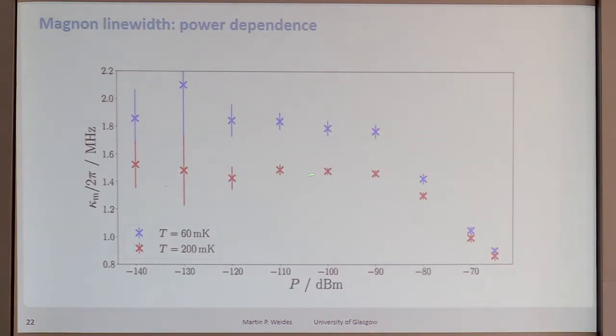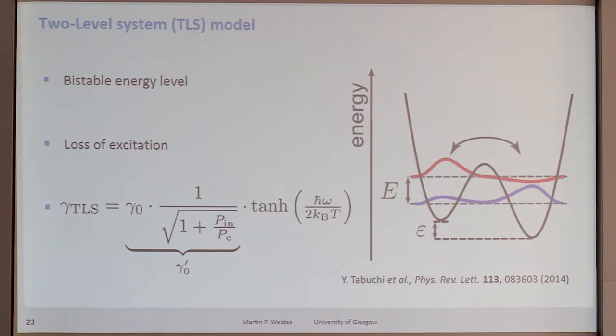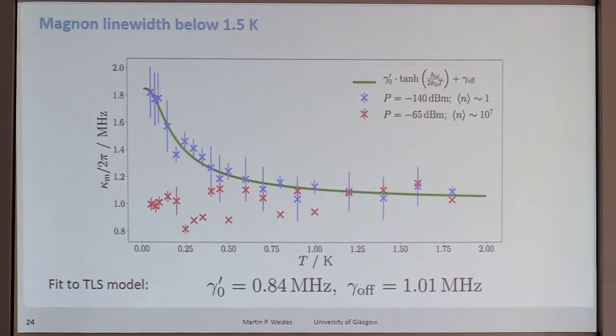This dependency, the power dependency and the temperature dependency can be explained by a two-level system model. This was also showed by our first speaker. It was actually proposed in this publication back in 2014. The two-level system model is a very well-known system in the field of superconducting resonators nowadays. It's, but it has been actually developed for dielectric materials back in the 70s and 80s. So the concept is you have your quantum system, which couples incoherently to a bath of defects of two-level systems. And these TLS are absorbing energy from your quantum system. And this leads to a line width being power and temperature dependent. Also the frequency enters here.